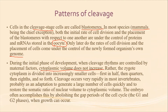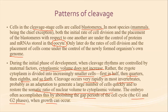During the initial phase of development, when cleavage rhythms are controlled by maternal factors, cytoplasmic volume does not increase. Rather, the zygote cytoplasm is divided into increasingly smaller cells — first halves, then quarters, then eighths, and so forth. Cleavage occurs very rapidly in most invertebrates, probably as an adaptation to generate a large number of cells quickly and to restore the somatic ratio of nuclear volume to cytoplasmic volume. The embryo often accomplishes this by abolishing the gap periods of the cell cycle, i.e. G1 and G2 phase, when growth can occur.